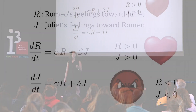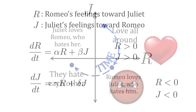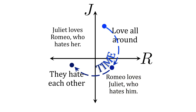When r or j are positive, that represents feelings of love. But when r and j are negative, that represents feelings of hatred. We can visualize their feelings on a plane like this, and time moves us around the plane to tell us the story of their relationship.